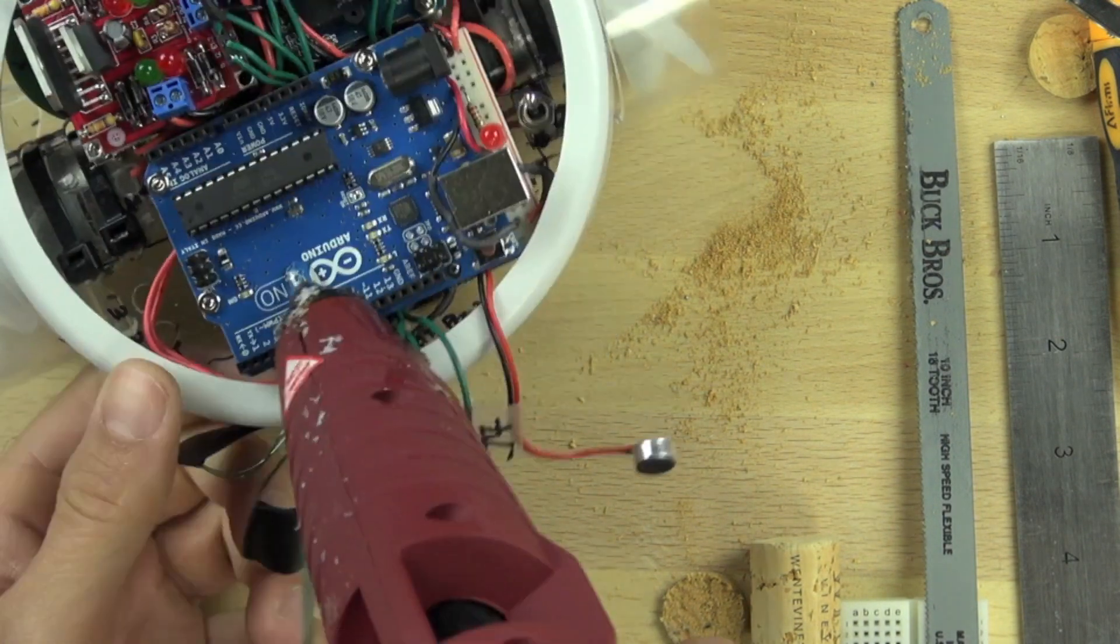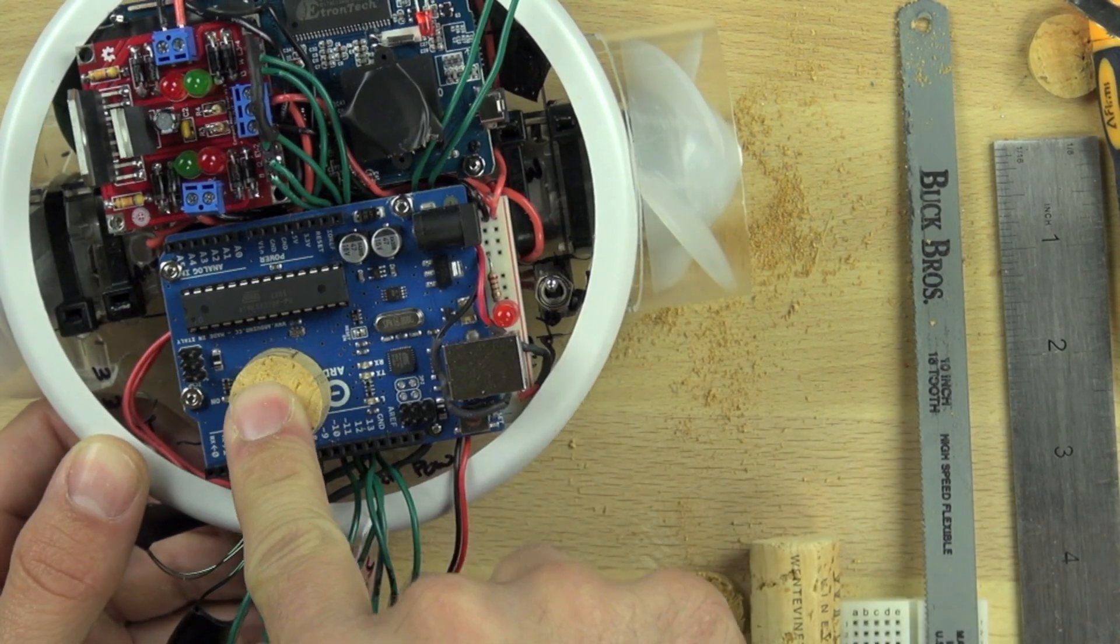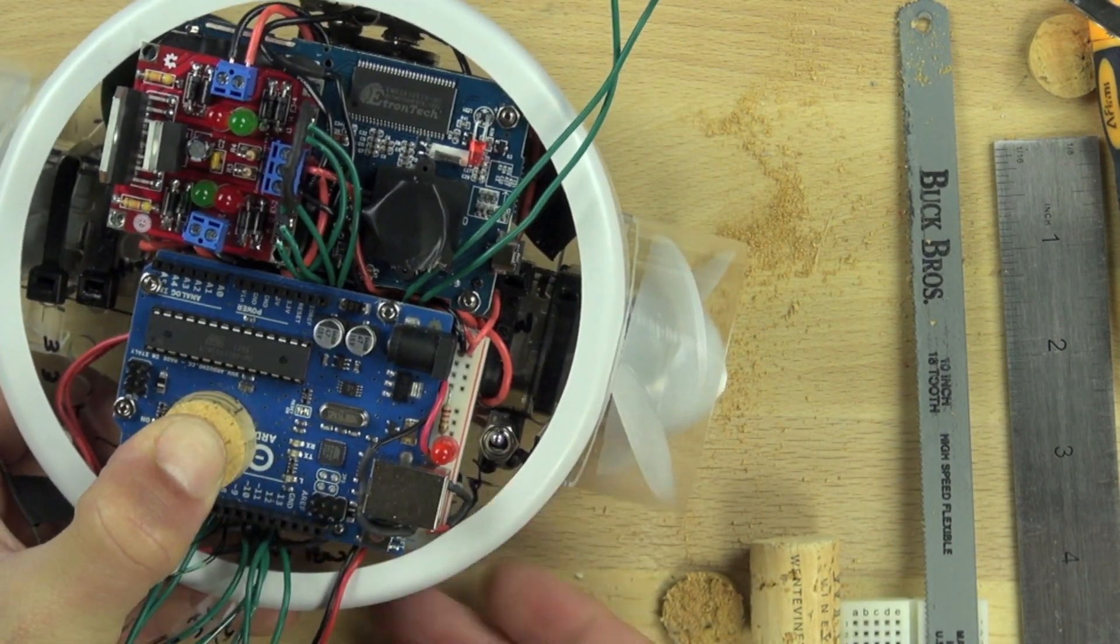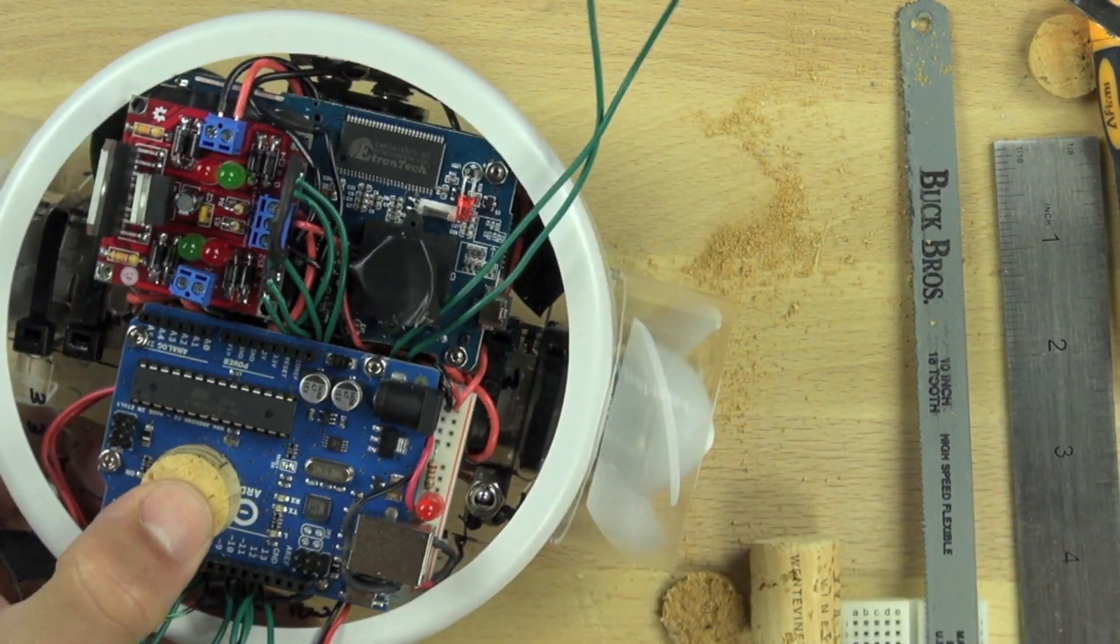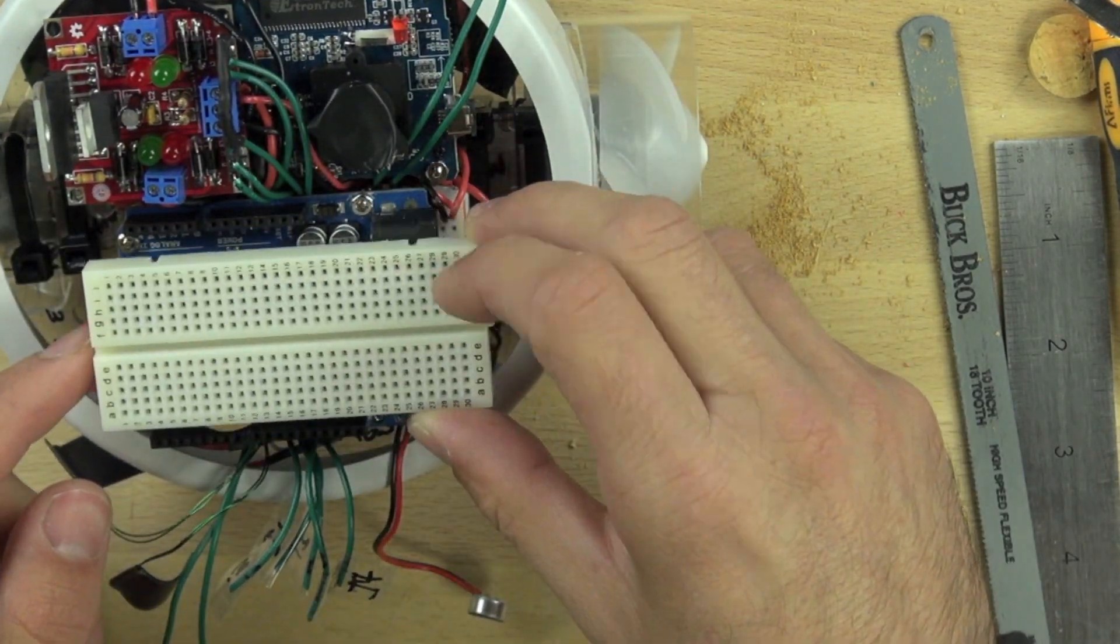Now that we have the cork the right size, we're going to squeeze out a blob of hot glue about the size of a dime and push our cork down on the center of it. That way the cork will be able to support our breadboard.